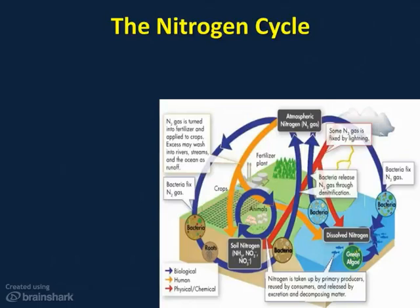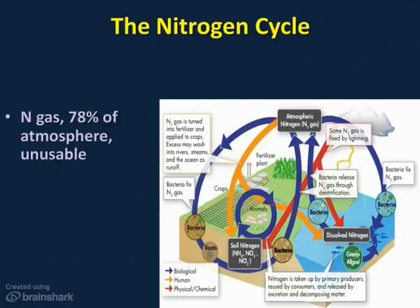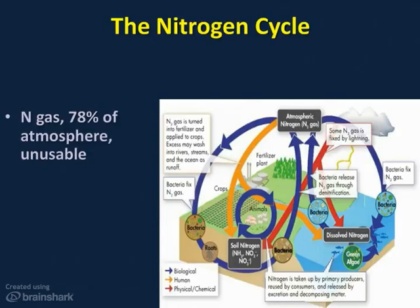The nitrogen cycle is a little more complicated, so we're going to take two slides to sort it out. 78% of our atmosphere is nitrogen, but very little of it is of any use to living things as is. All living things need nitrogen to make two things: amino acids for proteins and nucleotides for nucleic acids. Nitrogen occurs naturally in the soil as ammonia (NH₃), nitrate ions (NO₃⁻), and nitrite ions (NO₂⁻). These compounds come from animal waste and decaying organic matter. Some dissolved nitrogen exists in the ocean, and nitrogen gas is in the atmosphere.